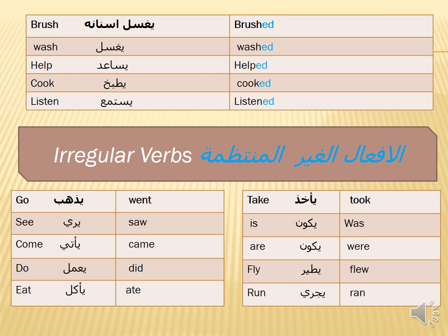The irregular verbs — الأفعال الغير منتظمة — as we said before, have different forms. For example: go → went, see → saw, come → came, do → did, eat → ate, take → took, is → was, are → were, fly → flew, run → ran.